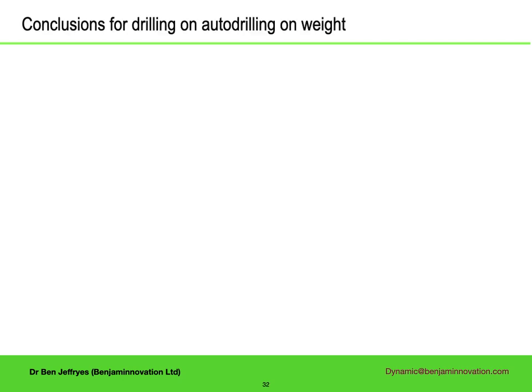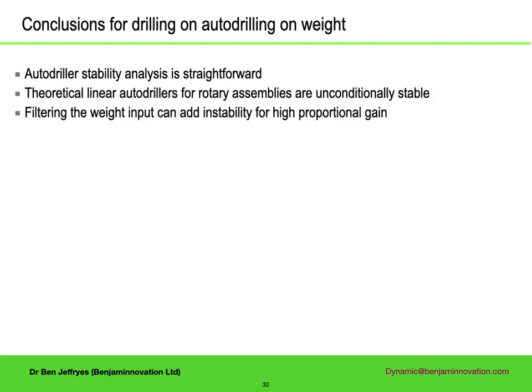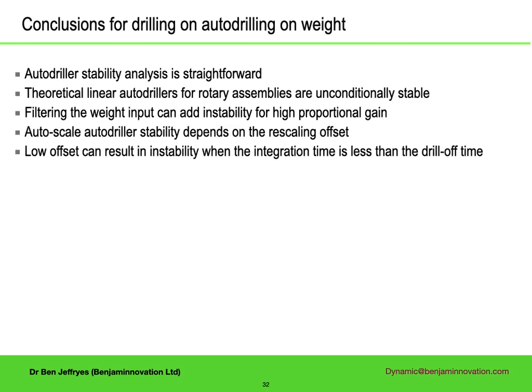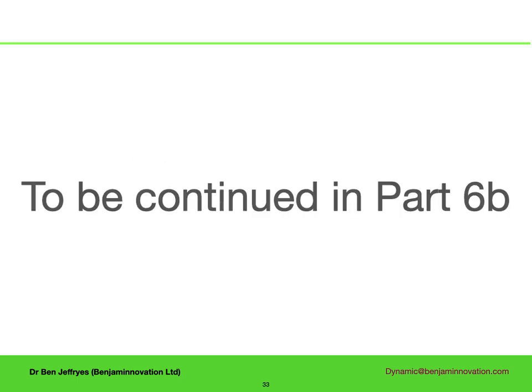All of that was for particular filter choices on a linear and an auto-scaled autodriller. What this demonstrates is that autodriller stability analysis is pretty straightforward when drilling with weight as the control parameter. While theoretical unfiltered autodrillers are unconditionally stable, adding filters to the weight can introduce instability for high values of the proportional gain. Autoscaled autodriller stability behaviour depends critically on the rescaling offset, and having a low offset can result in an additional instability mode when the integration time is less than the drill-off time. That was all for weight control — it's all more interesting with pressure control, for which you need to watch part 6b.